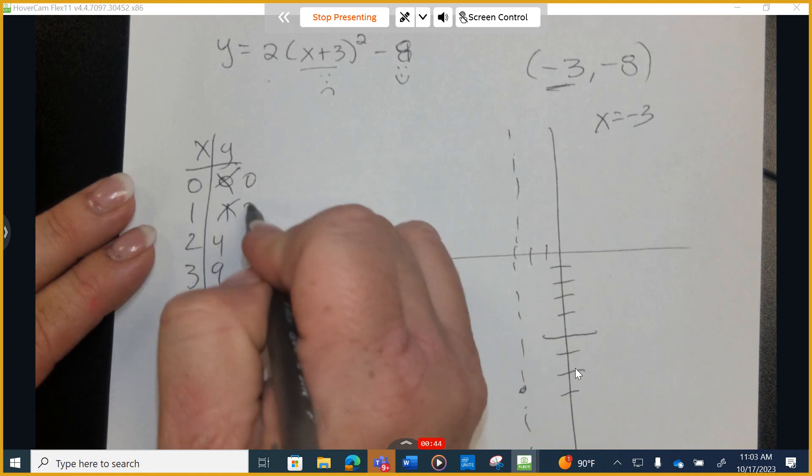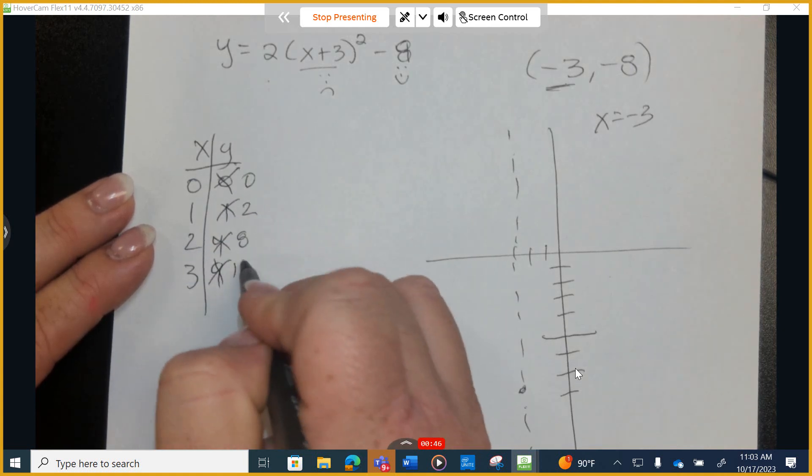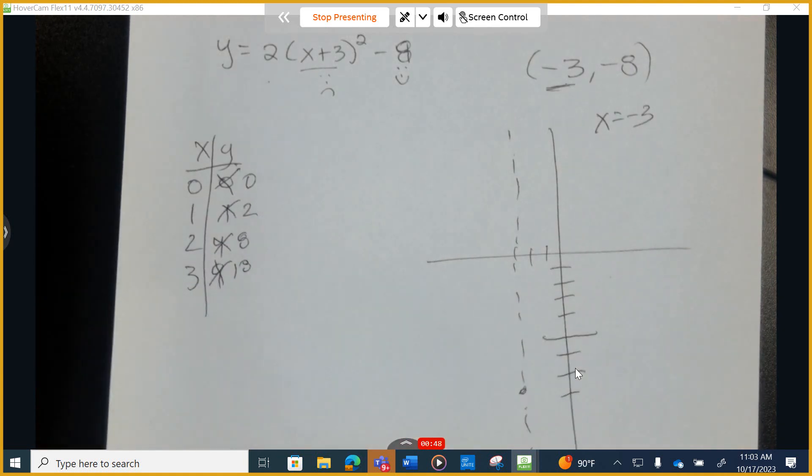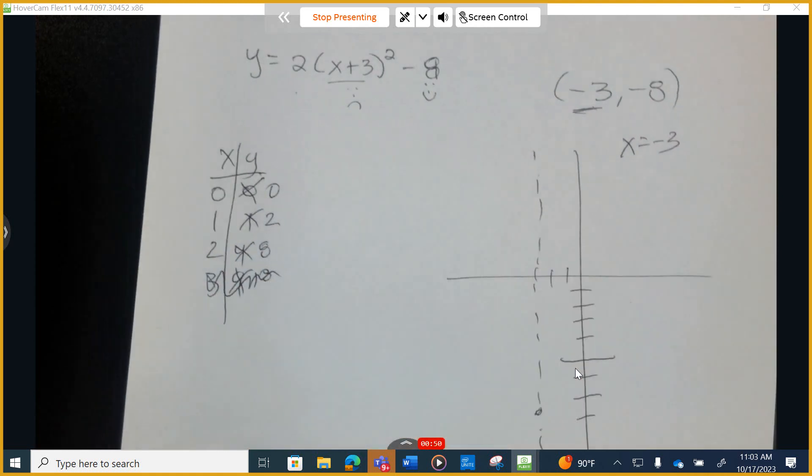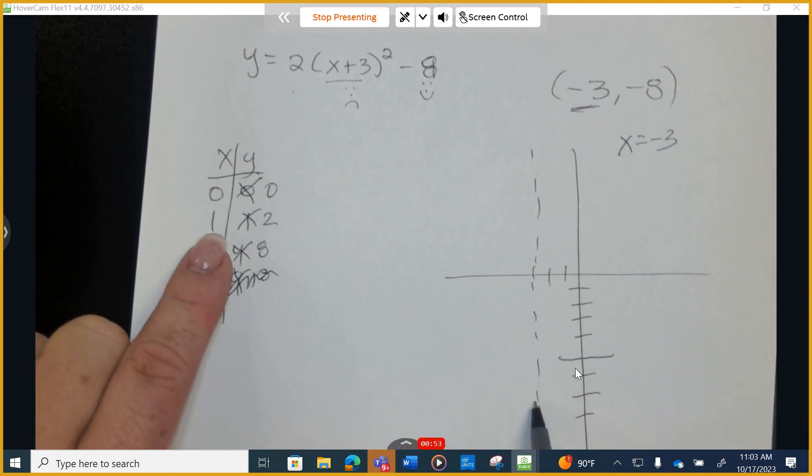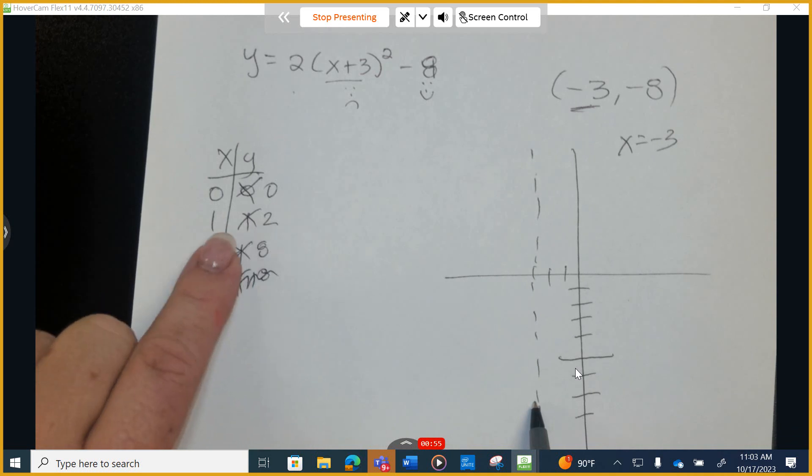Zero times 2 is 0. One times 2, four times 2, nine times 2. There's no way I'm going all the way up to 18. I'm just going to tell you that. That's past my graph. I'm not worried about that. This is 0, 0. What does this mean for those that are confused? What does this mean?